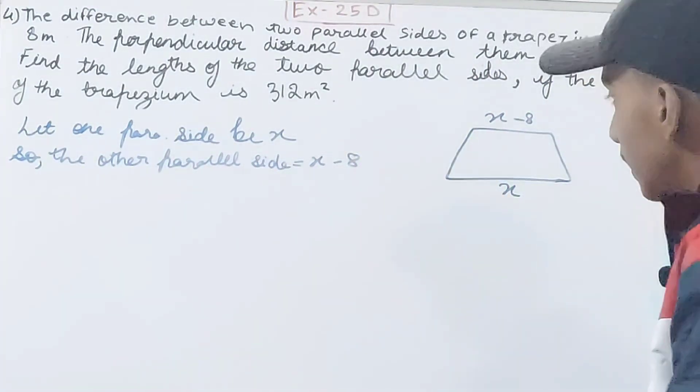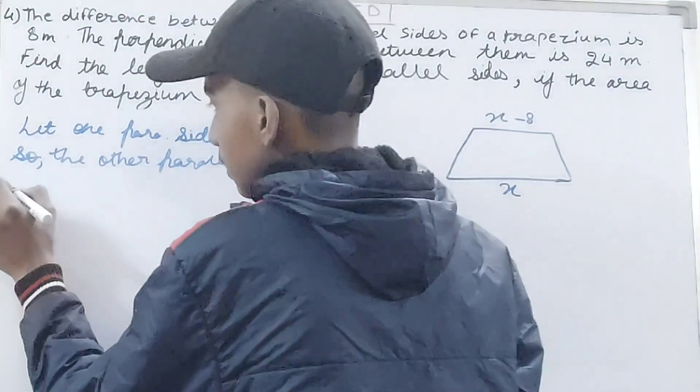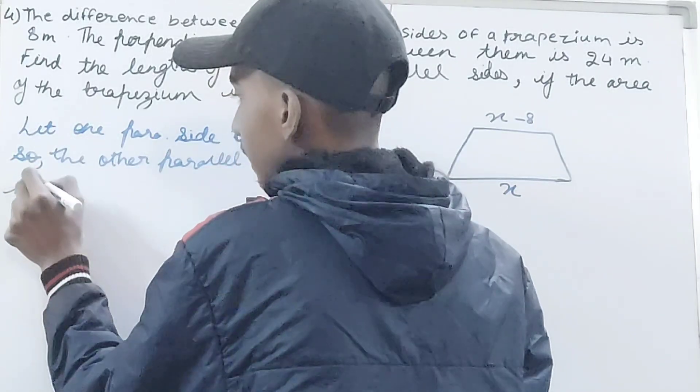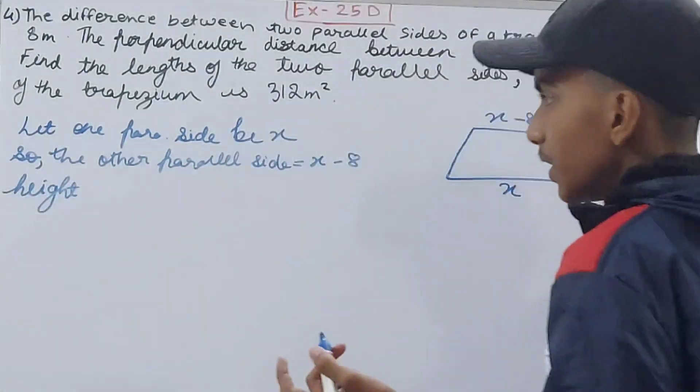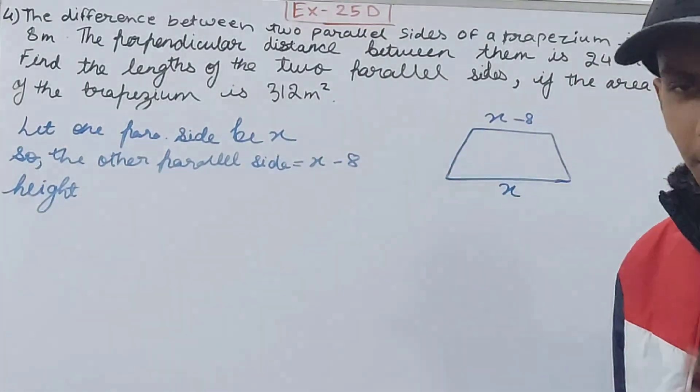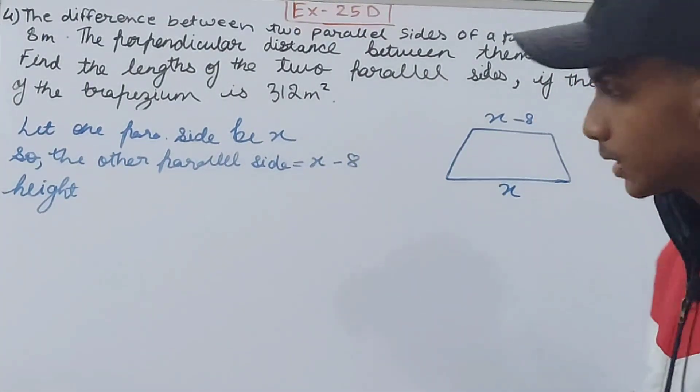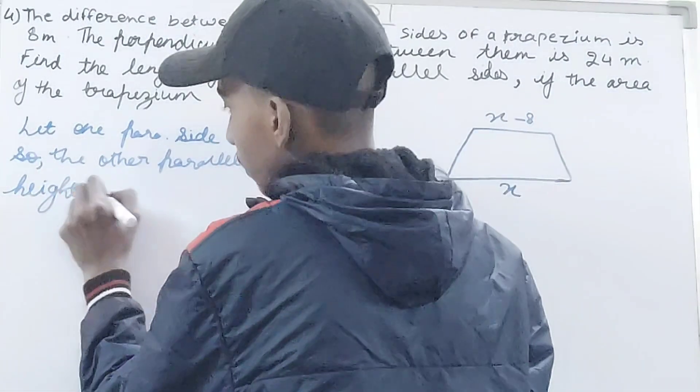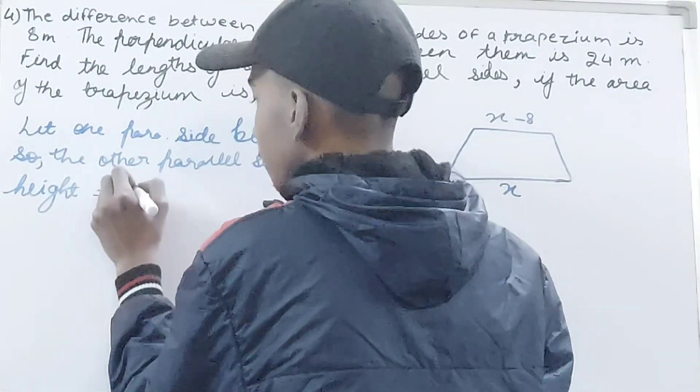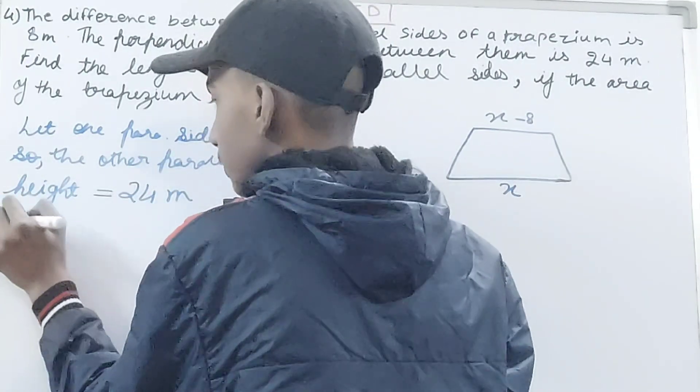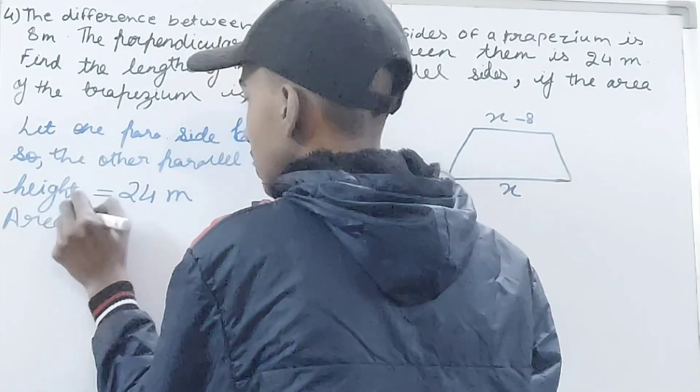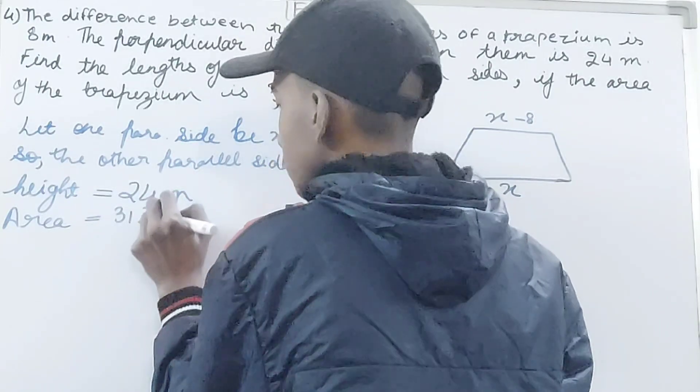Now see what I know for the height - the perpendicular distance means the same thing. Perpendicular distance, shortest distance - this is your height or altitude, which is 24 meters. And the area is 312 square meters.